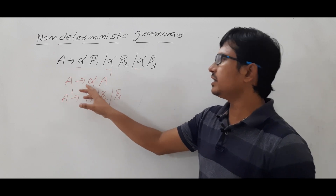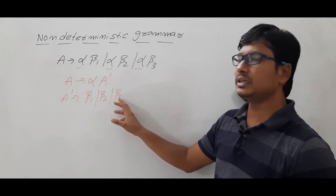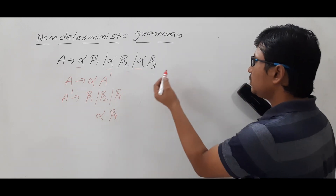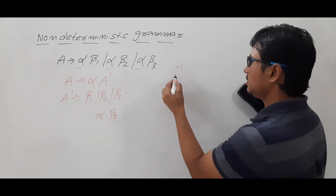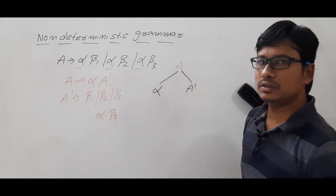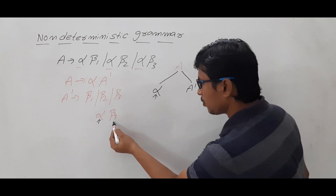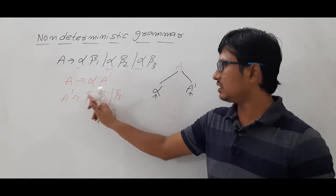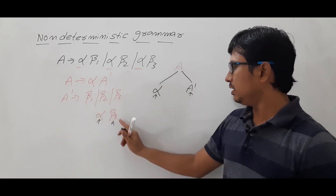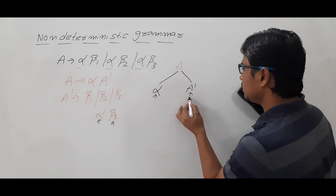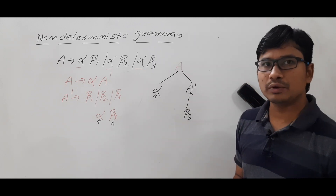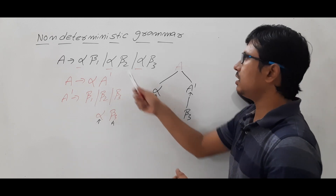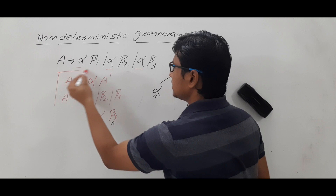So now A determines α A-dash, and A-dash determines β1 or β2 or β3. Let's revisit the previous example: you want to generate αβ3. The algorithm starts from the start symbol A, and A determines α A-dash — that is the only production — so the input pointer and descent pointer match on α and the input pointer advances. Now A-dash is a non-terminal, so you generate a production. The pointer is pointing to β3, so you pick the production β3. There is no backtracking here. We have removed backtracking by converting the non-deterministic grammar to the equivalent deterministic grammar.